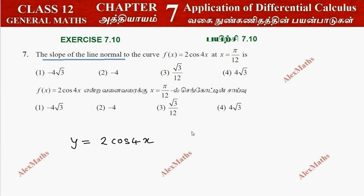This is a differentiation dy/dx. Using the chain rule: 2 into the derivative of cosine gives minus sin(4x), and the derivative of 4x gives 4.